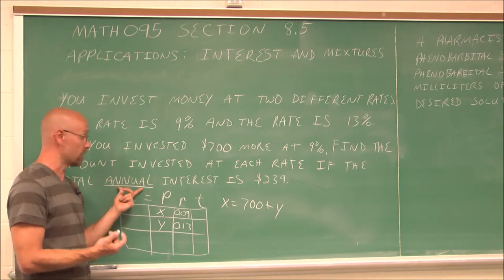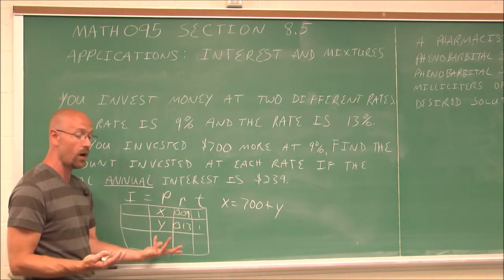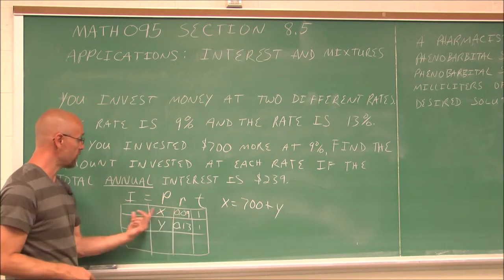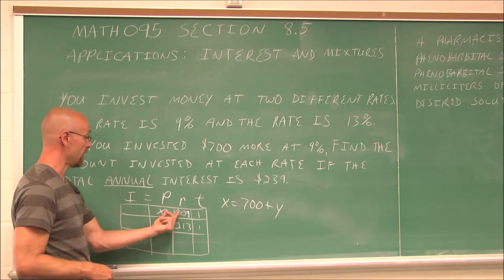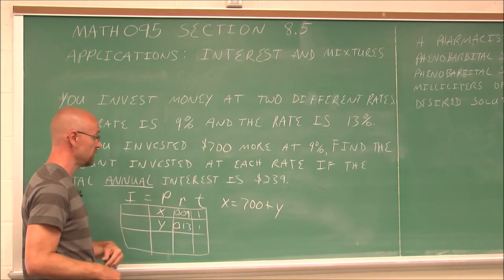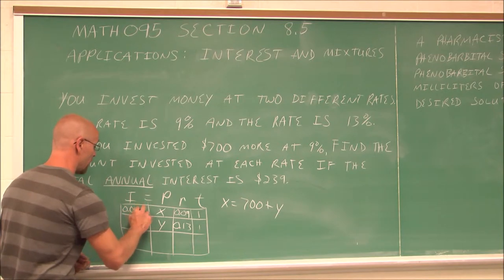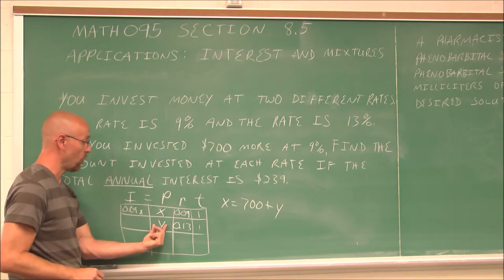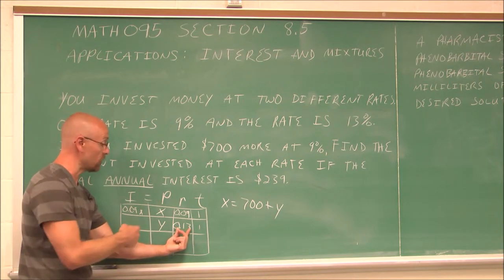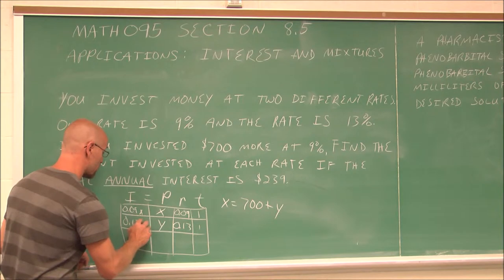Annual means every year. So our t, or our time in years, is just 1. Now, if we were to find this interest, we can complete our table. We can say x times this value times t. So we'd get 0.09x. And this interest is going to be y times 13%, or 0.13 times time. So we get 0.13y.